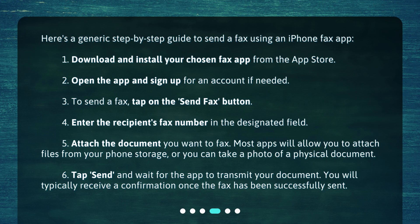Step 4: Enter the recipient's fax number in the designated field. Step 5: Attach the document you want to fax. Most apps will allow you to attach files from your phone storage, or you can take a photo of a physical document. Step 6: Tap Send and wait for the app to transmit your document. You will typically receive a confirmation once the fax has been successfully sent.